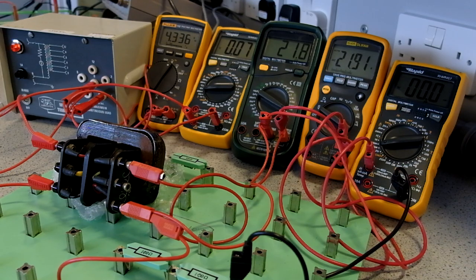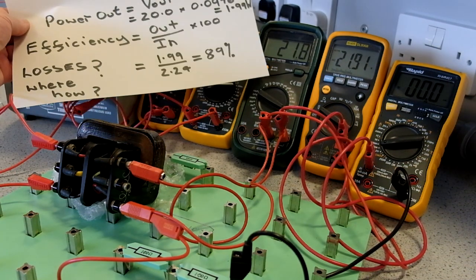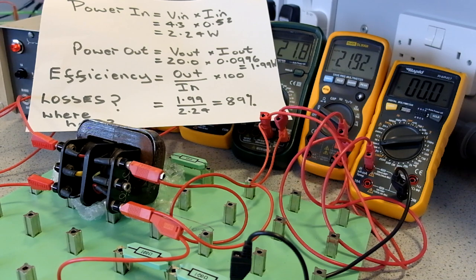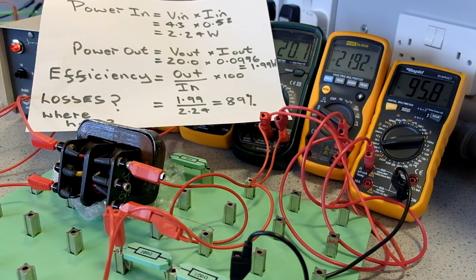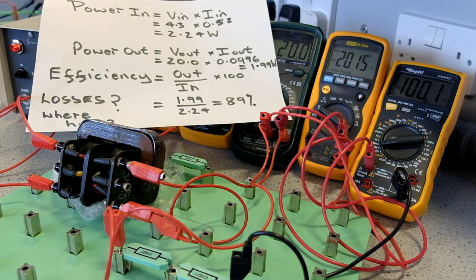If we look at the power in figures, what we have to work out efficiency: we have power in of 4.3 times 0.52 gives us 2.24 watts going in. Then we have an output of, we will connect the load in, we have an output voltage of 20.1 and 0.996 milliamps, which is 100 milliamps. If we multiply those two together, that gives us 2.0 watts coming out.